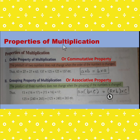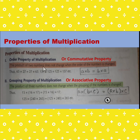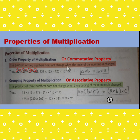Next are the properties of multiplication. The first property is the order property of multiplication, also called the commutative property. The product of two numbers does not change when the order of the numbers is changed. For example, 2 into 3 is 6, and 3 into 2 is also 6. So A into B equals B into A, where A and B are any numbers.